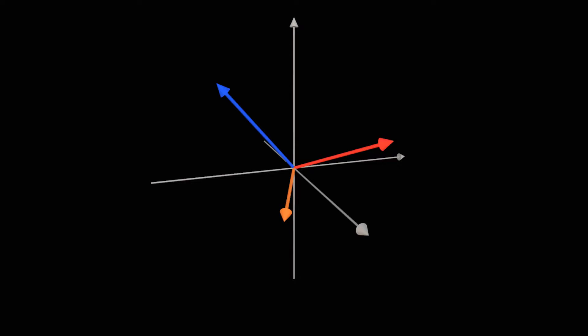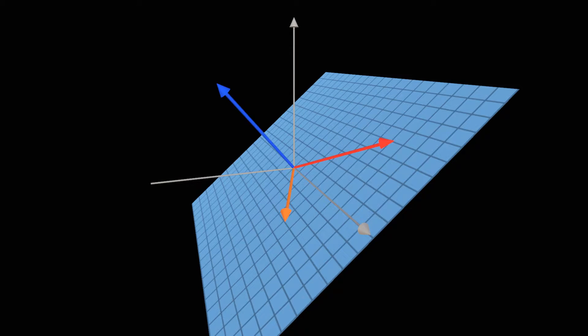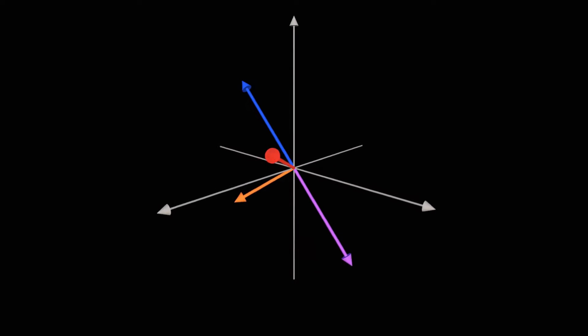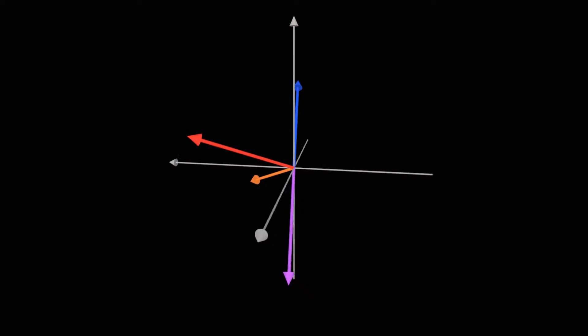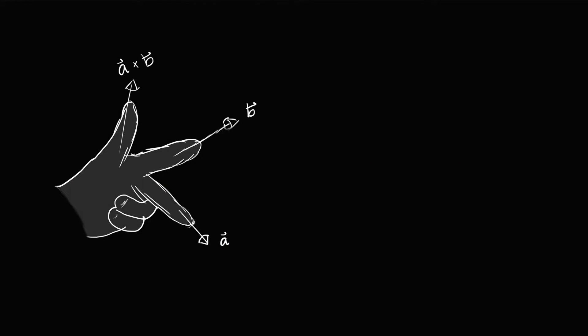This vector is perpendicular to both A and B. So if you imagine A and B as defining a plane, the normal vector of this plane would be the cross product. So how do we tell which direction it's pointing in? Because obviously, there are two different directions that a normal could be.